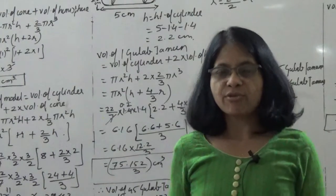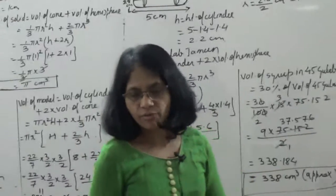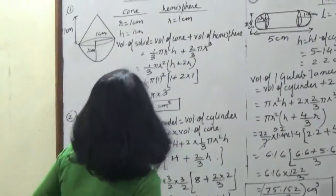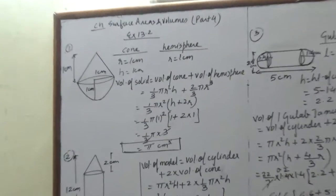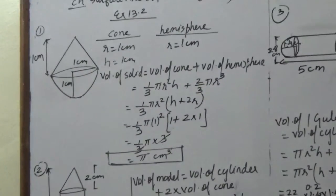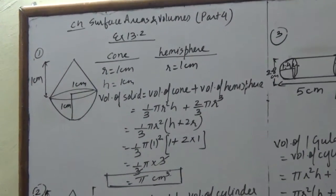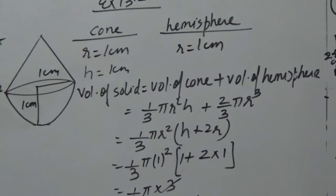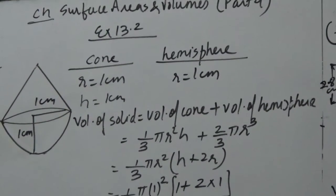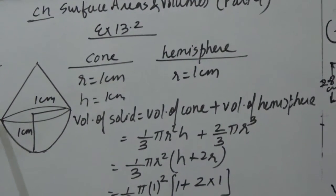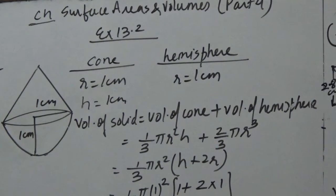We will continue with part 4 of chapter Surface Area and Volume, exercise 13.2, question 1. A solid is in the shape of a cone standing on a hemisphere, with the cone standing on top of the hemisphere.